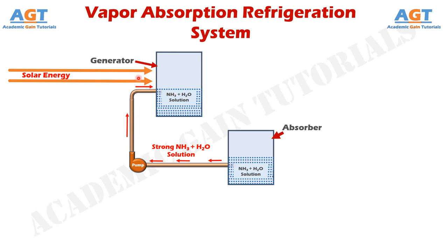Now, when the solution of ammonia and water reaches the generator, heat is produced inside the generator using the solar energy supplied to it. And when heat is applied to this solution, both ammonia and water from this ammonia-water solution turn into vapor inside this generator.